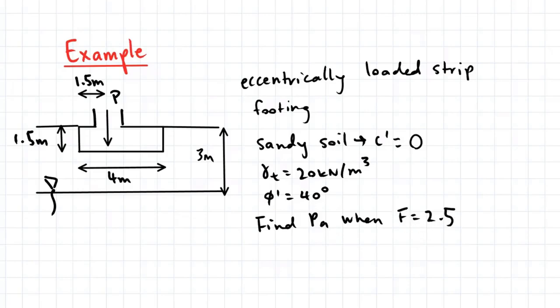So let's first address the eccentric loading. Because our compressive force is not acting through the centre of our footing, we need to determine a dimension which is known as the effective width. So that's B' which is equal to B minus 2e where e is our eccentricity.